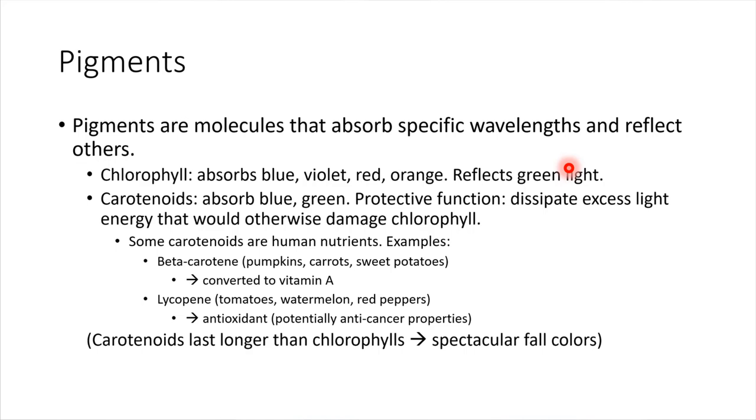There are other types of pigments that plants might have as well, in addition to chlorophyll. They might have carotenoids. And carotenoids, think of carrots. Carrots are orange, right? So these are pigments that absorb blue and green, but they do not absorb things like orange and yellow and red. So those are the colors that would get reflected from these pigments. The carotenoids that most plants have are very protective. They help to reflect extra light, extra energy that might otherwise be damaging to the plant, damaging to the chlorophyll molecules. And so these are here for a protective function.